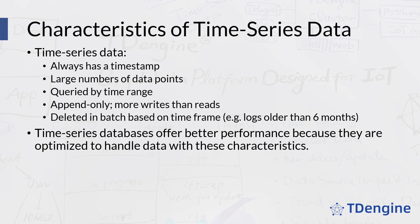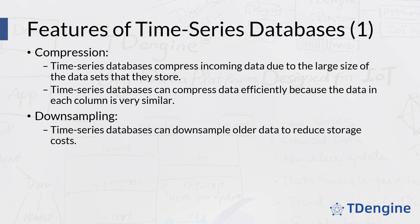There are a few features that time series databases need to support to handle time series data. The first of these is compression. If time series data is being generated constantly, it's going to become very large, very fast, and require a huge amount of storage space. That's why it's essential that time series databases have strong compression capabilities.